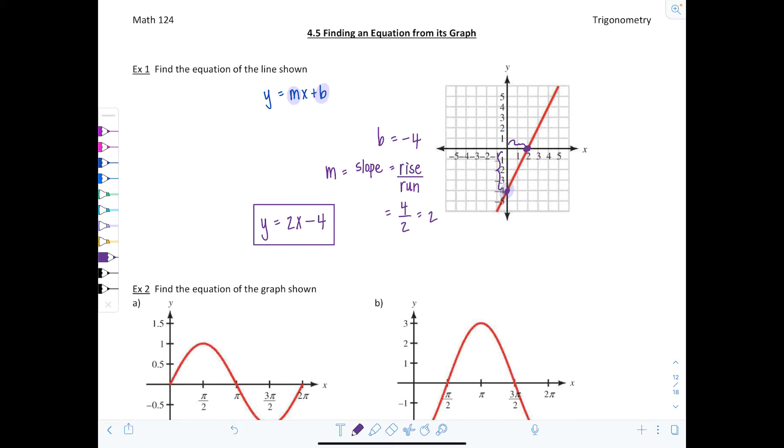You're going to look at the graph, identify the key features, and then fill that in into the appropriate equation. So let's think back what the equations for the graphs of sine and cosine are.